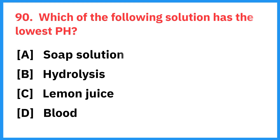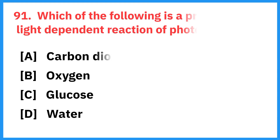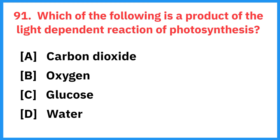Which of the following solution has the lowest pH? Right answer is lemon juice. Which of the following is a product of the light-dependent reaction of photosynthesis? Right answer is oxygen.